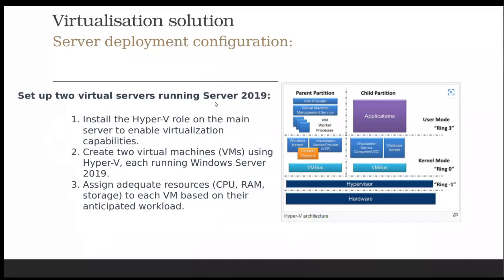Set up two virtual servers running Hyper-V. That could be done with two different servers, or you can install the Hyper-V role on the main server to enable virtualization. Using Hyper-V, each virtual server runs Windows Server 2019 and you assign adequate resources — you have full control to assign two, three, or four processors and enough memory, probably 16 gigabytes each. Your server needs a lot of RAM to support all these users.